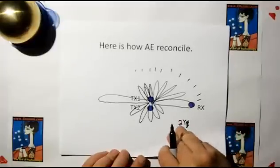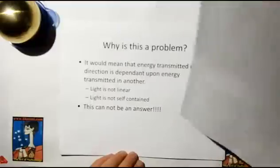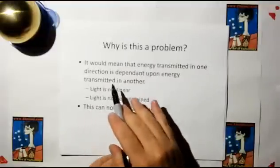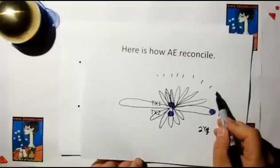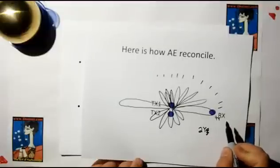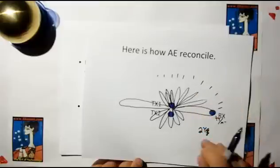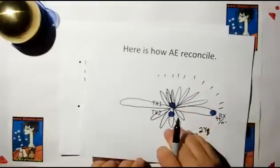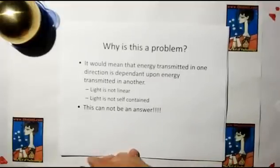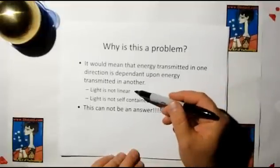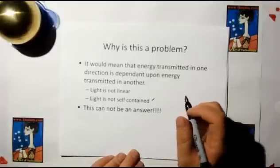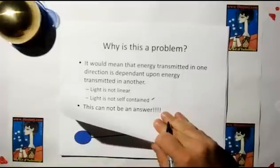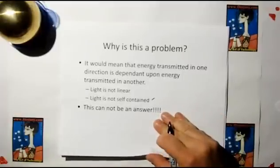That's how it's normally reconciled, but there's a problem with this. It would mean that the energy transmitted in any one direction is dependent upon the energy transmitted in another. The only way we can get 4Y here as 4Y per meter squared is to get less than 4Y per meter squared somewhere else, so that the total 2Y could be obtained. This means that light can't be linear, light is not self-contained, which is one of our things we said must be true in video number 14. This cannot be the answer, at least it cannot be the solution all by itself.